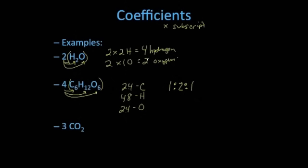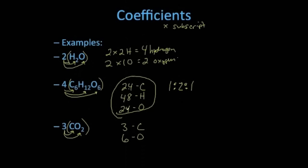The same applies to water: four to two is the same ratio as two to one. For three molecules of carbon dioxide, 3CO2: distribute the three to the invisible one carbon to get three carbon atoms, and three times two gives six oxygen atoms. To find the total number of atoms, multiply the coefficient by each subscript and add them all together. In four glucose molecules: 24 plus 48 plus 24 equals 96 atoms total. Two water molecules have six atoms, and three carbon dioxide molecules have nine atoms.